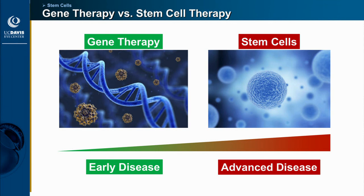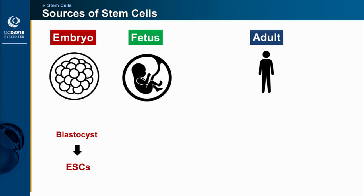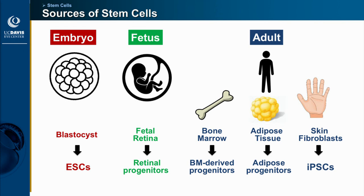Transitioning to stem cells — gene therapy's sweet spot is early disease, because you want to treat before cell death occurs. Stem cells have the potential to treat advanced diseases because you can potentially replace dead cells. Stem cells can come from embryos through embryonic stem cells, fetal retina can provide retinal progenitors, and adults can provide cells through bone marrow, fat, and skin cells, which can be reprogrammed into induced pluripotent stem cells (iPSCs). You don't want to inject completely immature pluripotent stem cells because they can grow into any cell type, including cancer.